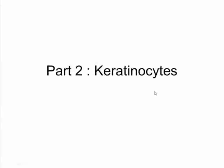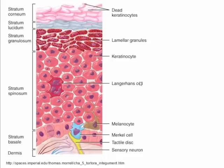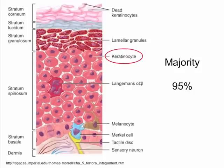In this video we are going to talk about keratinocytes. These are cells that are specialised in producing keratin. Over 95% of the cells in the epidermis are keratinocytes. The other cells we might find there are the Langerhans cells, melanocytes, and Merkel cells.